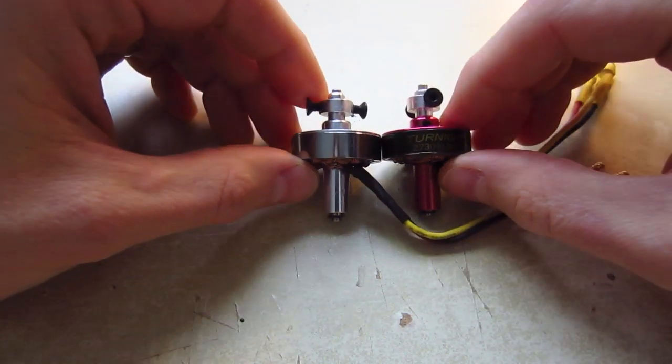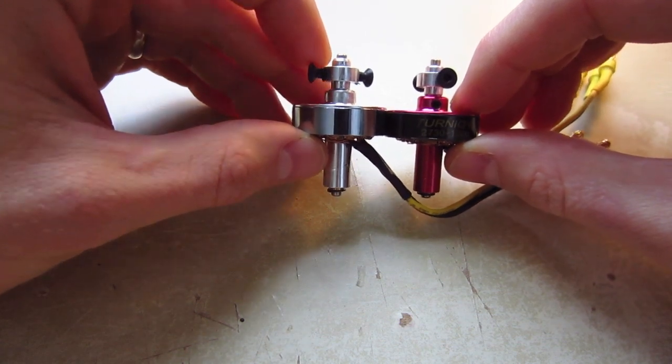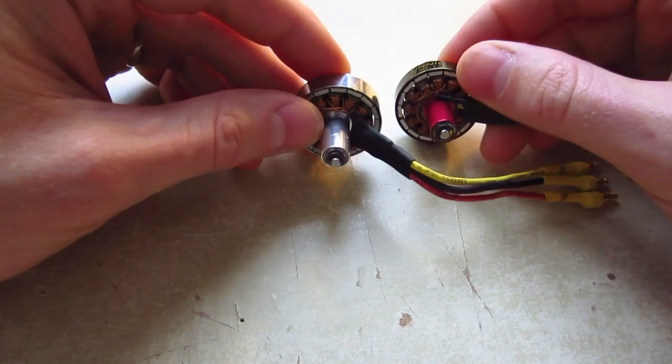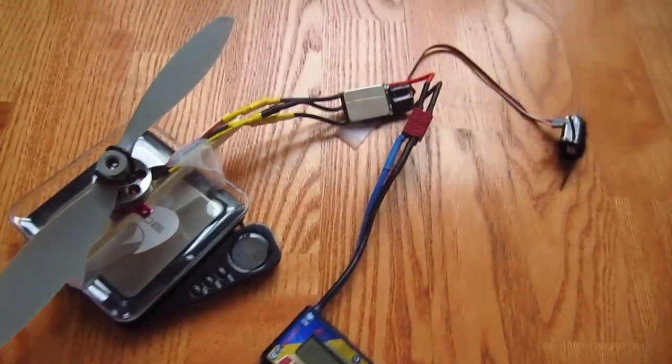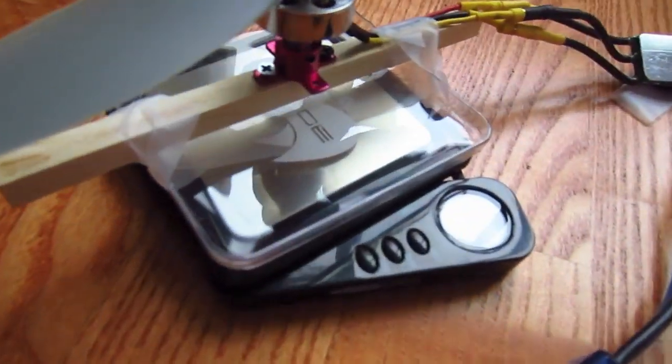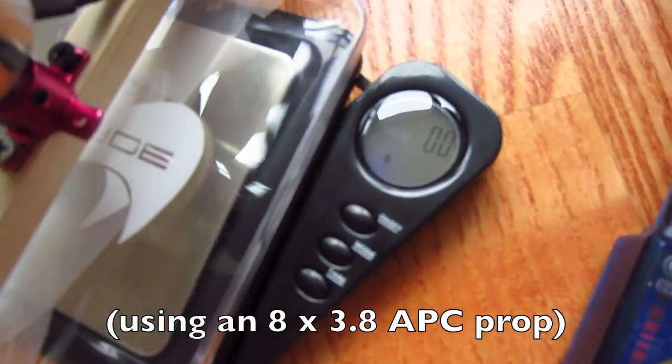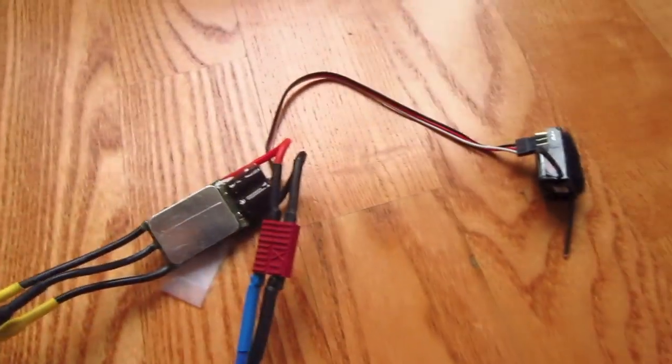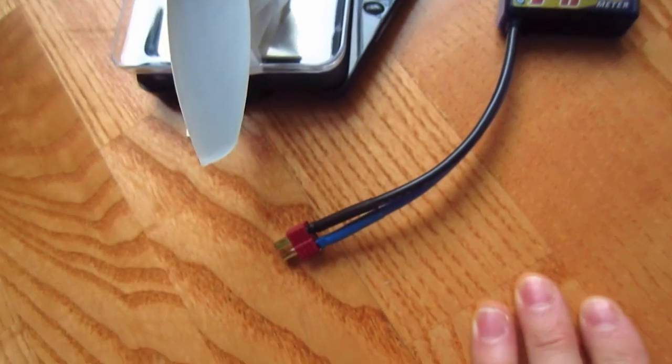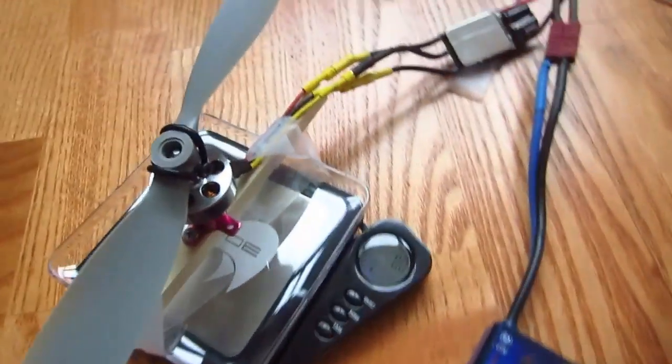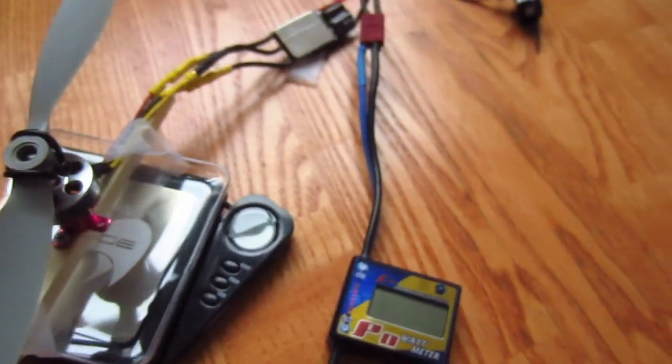I want to do a static bench test on both of these to see what kind of thrust they're generating and at what amp draw, so I can get a better idea of which one is better to purchase. This is my setup - I know it's not perfect, but it's the best I can do. I've got the motor sitting on top of the scale which is zeroed out, going to an ESC and receiver. Here's the watt meter, then the battery will hook up here. I'm going to spool up first the Hextronic, then the Turnigy 2730 to see what happens.